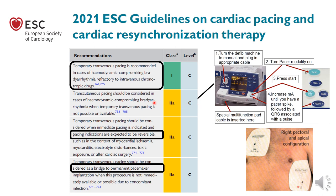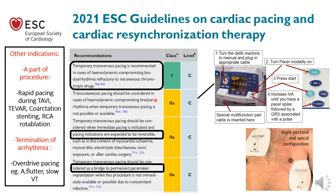There is also a class indication for temporary transcutaneous pacing when the patient is hemodynamically compromised by bradyarrhythmia and the transvenous system is not available. Other indications include use as part of a procedure such as rapid pacing during TAVI, TAVR, coarctation stenting, or rotablation, and for termination of certain arrhythmias like overdrive pacing in atrial flutter.